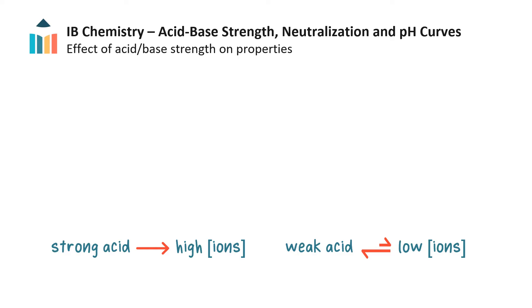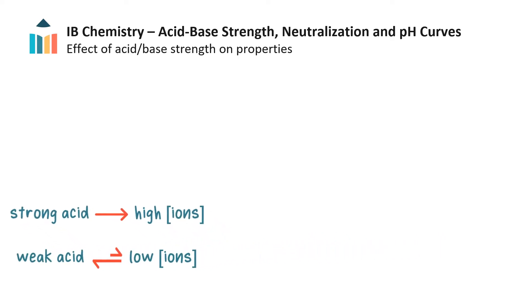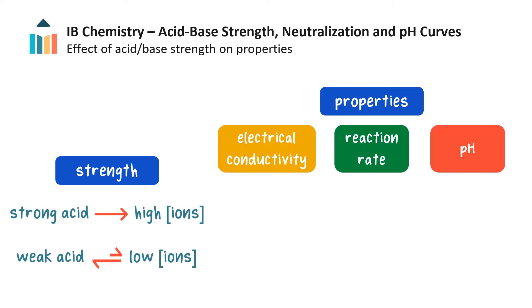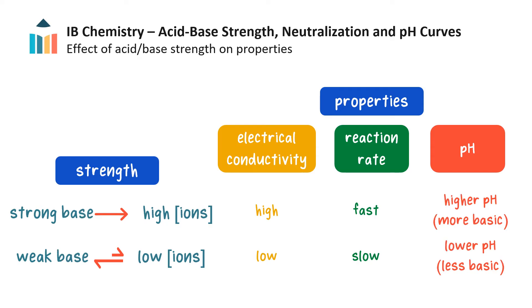Since a strong acid has a higher concentration of dissolved ions relative to a weak acid, assuming the same number of moles of both acids are placed in the same solution volumes, their properties will differ. The more mobile ions there are in solution, the higher is the electrical conductivity, so strong acids have higher electrical conductivity than weak acids. The more hydrogen ions released from acids during ionization, the faster is an acid-base reaction, as particles will collide more frequently. And the more hydrogen ions there are in solution, the lower is the pH. The same is true for bases, except reaction rate depends on the concentration of hydroxide ions in solution, in the case of alkalis, and the pH is higher for a stronger base and lower for a weaker base.